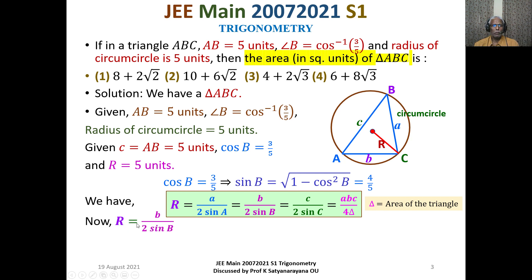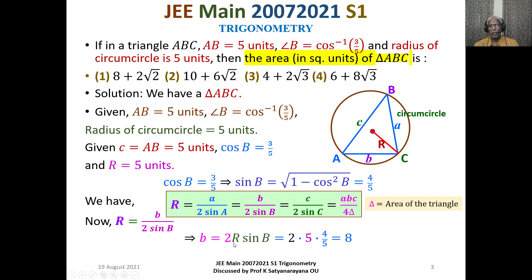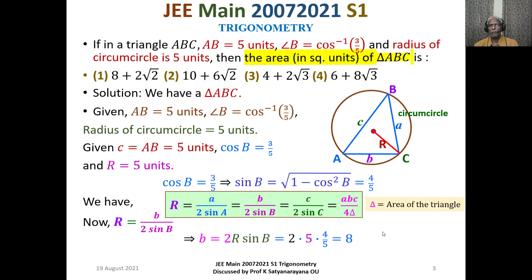Using capital R equals b divided by 2 sin B, since we know capital R and sin B, we can find side b. Side b equals 2 times R times sin B, which is 2 times 5 times 4 by 5. The 5s cancel, giving b = 2 times 4 = 8.